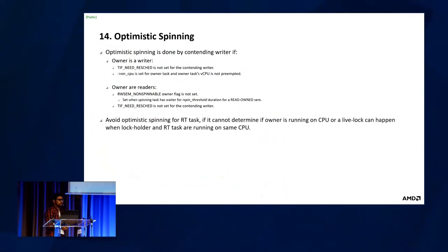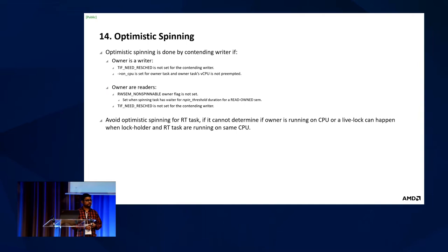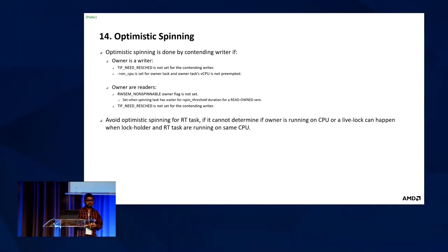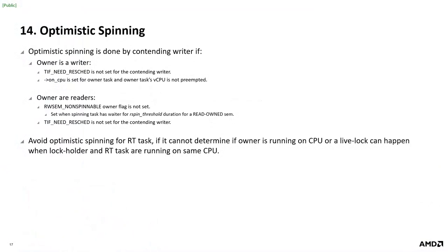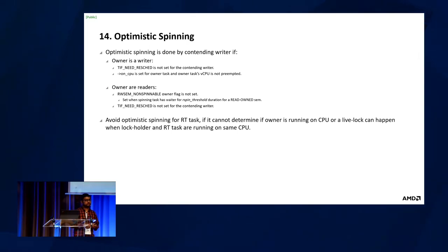Optimistic spinning is done by writer threads. If the lock owner is currently running on a CPU, instead of sleeping to avoid a context switch, the writer thread can spin waiting for the lock to be released. The spinning exits if the owner leaves the CPU and is not running, if there is a high-priority task on the same CPU as the spinning waiter, or if the lock is owned by readers who have not left the critical section for a long time.